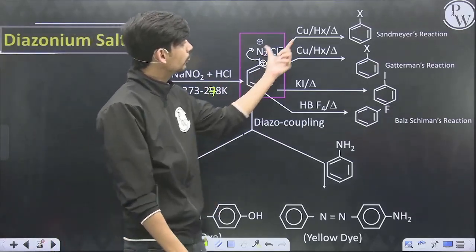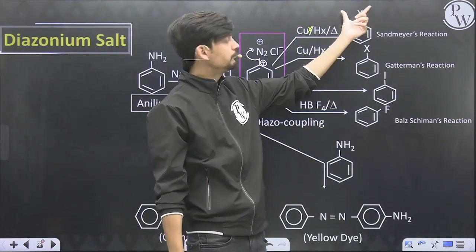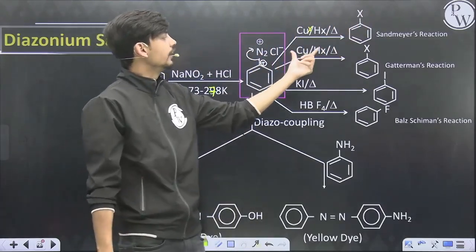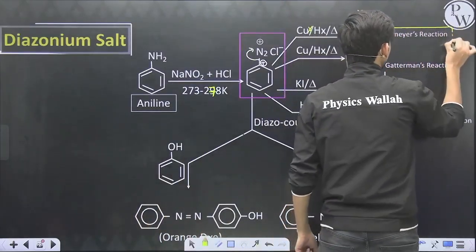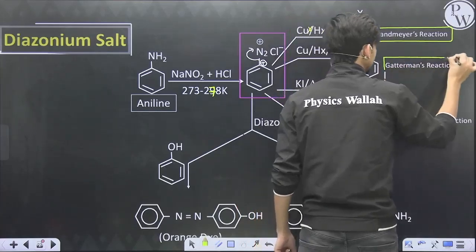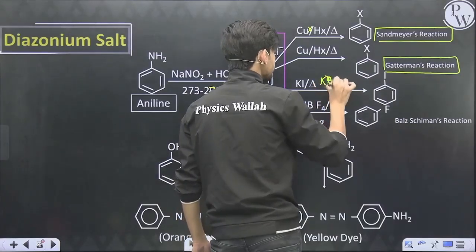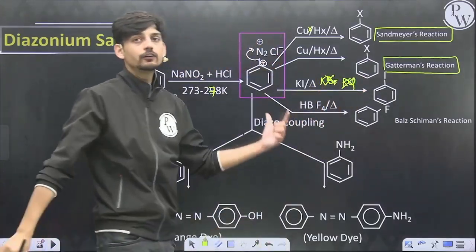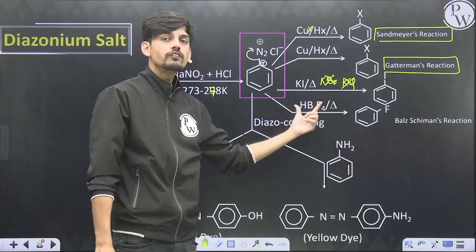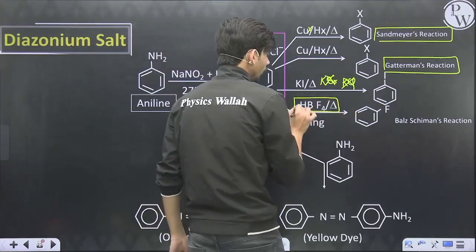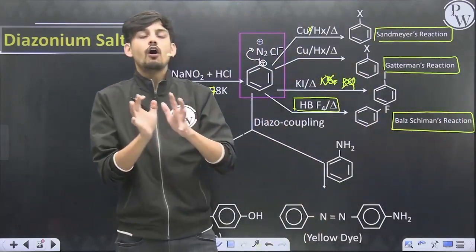Aromatic diazonium compounds are used for preparation of many compounds because they can undergo nucleophilic substitution. For aniline, we convert it to the diazonium compound, and this diazonium on reaction with copper salt and HX converts to X-benzene. The copper halide reaction is known as the Sandmeyer reaction, and the copper metal and HX mixture reaction is known as Gattermann's reaction. With KI only (not KBr or KCl), iodobenzene is directly obtained.